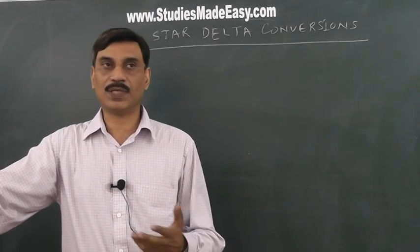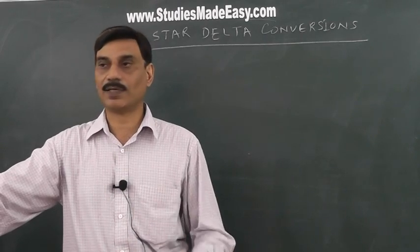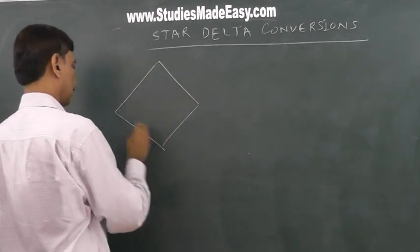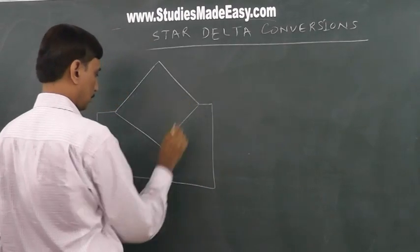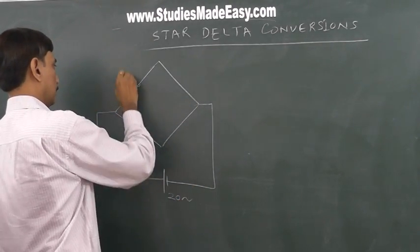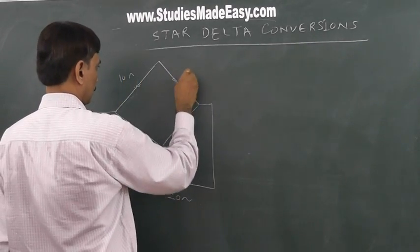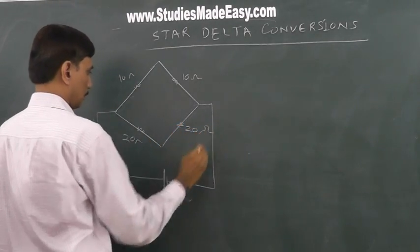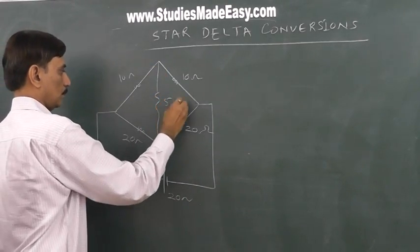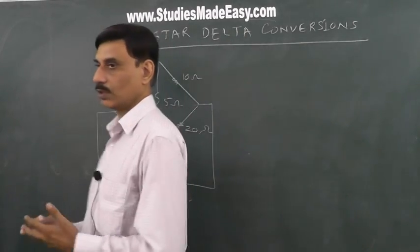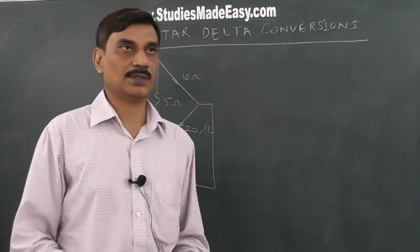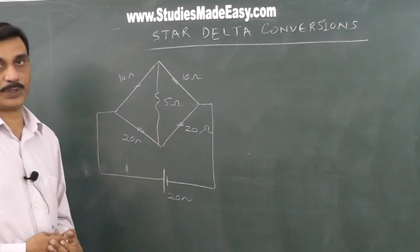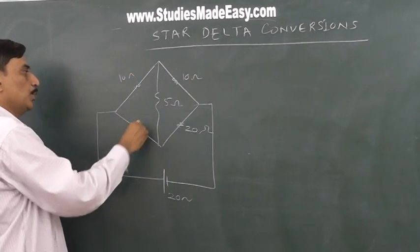Even in simple circuits, they are not always so simple that you can use only series and parallel combinations. Even in simple circuits they could be something like a Wheatstone bridge. This is a balanced Wheatstone bridge where P by Q is equal to R by S.